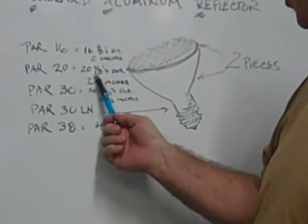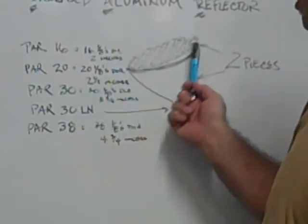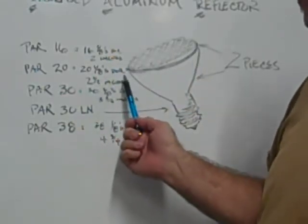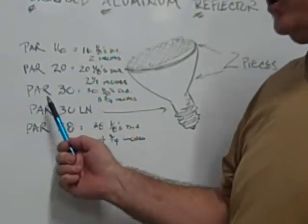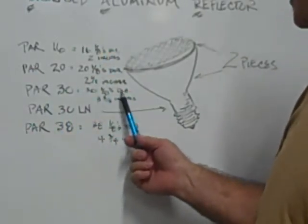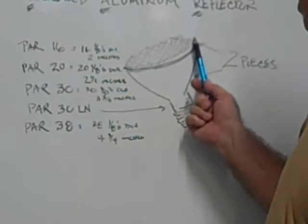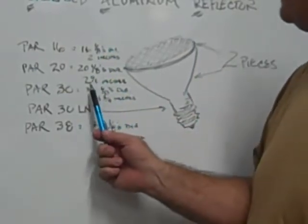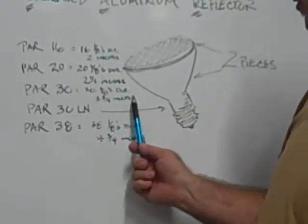A PAR 20 would be 20 eighths of an inch in diameter. That's equal to 2 and a half inches. A PAR 30 is 30 eighths of an inch in diameter across the face of the flood. And that's equal to 3 and 3 quarter inches.